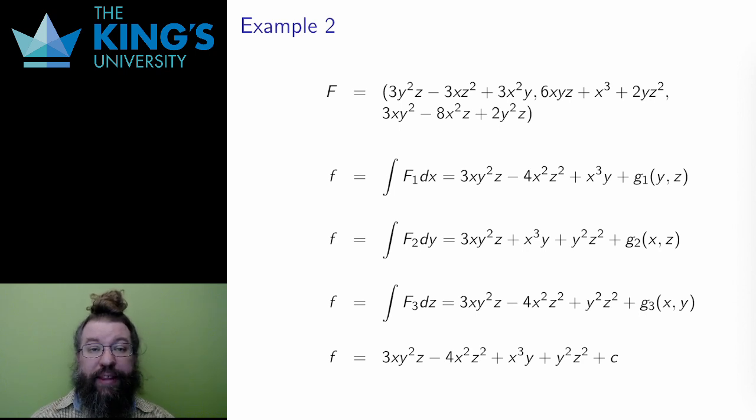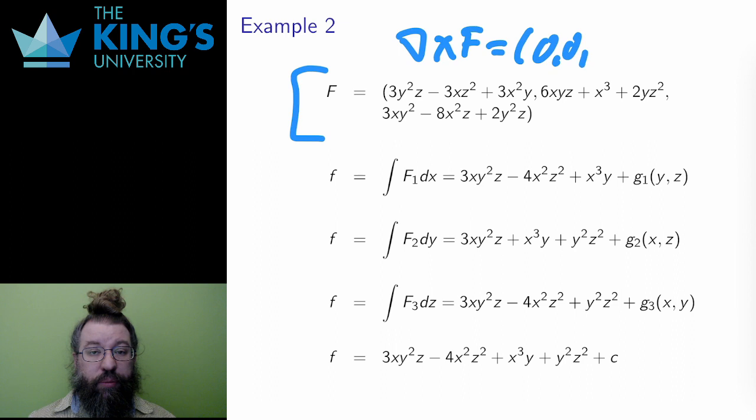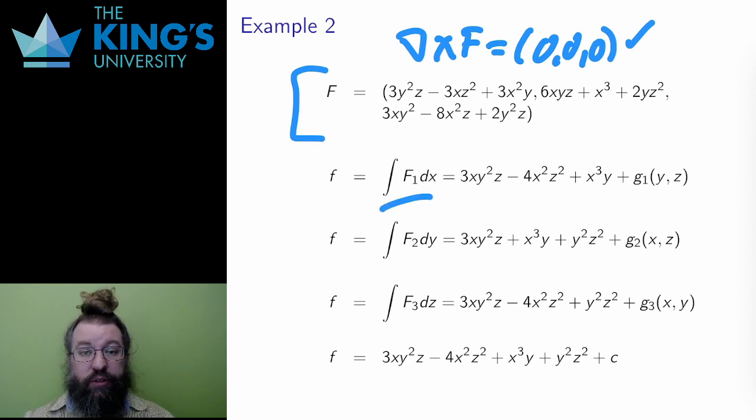Here's another example. This is a polynomial field, so it is defined for all real numbers, and you can check again if you wish that the curl is zero, so this is irrotational. Irrotational on a simply connected open set means conservative, so I can look for a potential. I set up the three integrals. Integral of f1 in x, integral of f2 in y, and the integral of f3 in z.